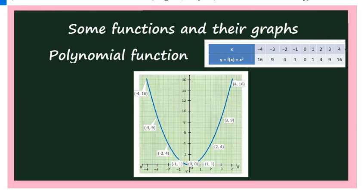To draw the graph of y = x², we take different values: x = −4 gives 16, x = −3 gives 9, x = −2 gives 4, x = −1 gives 1, x = 0 gives 0, x = 1 gives 1, x = 2 gives 4, x = 3 gives 9, x = 4 gives 16. Plotting all these points and joining them gives a curve — that is the graph of y = x².